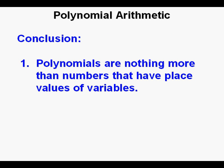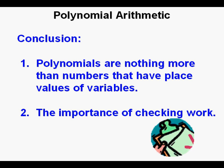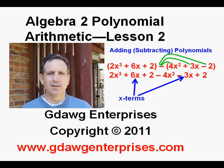In conclusion, polynomials are nothing more than numbers that have variables as place values. And secondly, we went over the importance of checking work. If you are not in the habit or discipline of checking work, this is the one thing you can do right now that will immediately make a great difference in your success as a student. This has been Algebra 2 Course, Lesson 2, Polynomial Arithmetic. Thanks for viewing.